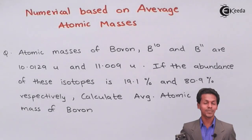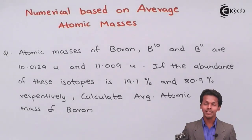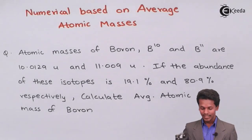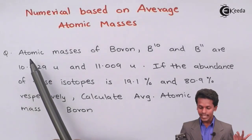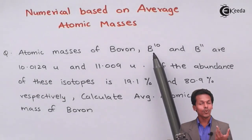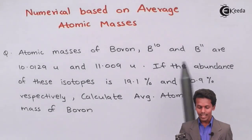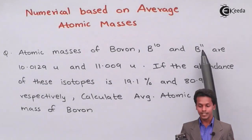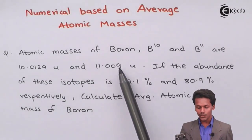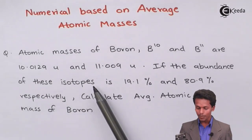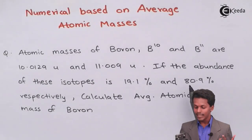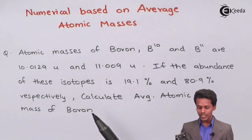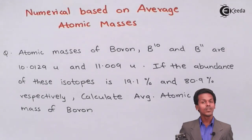As mentioned on your screen, there is a numerical based on average atomic mass. The atomic mass of boron-10 is 10.0129 unified mass and that of boron-11 is 11.009 unified mass. The abundance of boron-10 is 19.1% and that of boron-11 is 80.9%. We have to calculate the average atomic mass of boron.